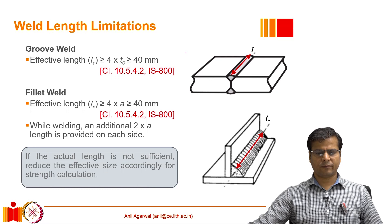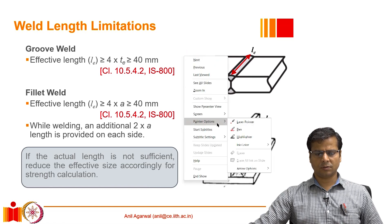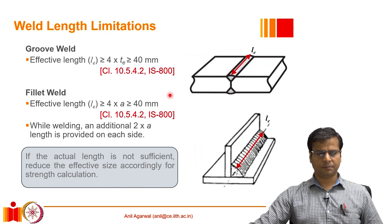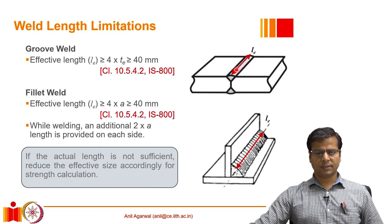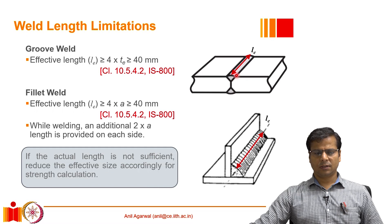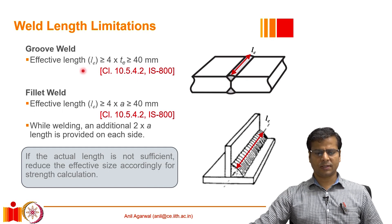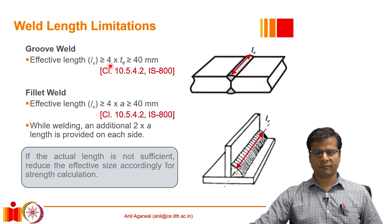In addition to the size requirement for the fillet welds, there are also some requirements for the length of the fillet weld as well as the groove welds. First we will talk about the groove welds. If we do a groove weld, the effective length should be at least 4 times the effective throat thickness of the groove weld, whether it is a full penetration CJP — complete joint penetration — or a partial joint penetration type of weld.